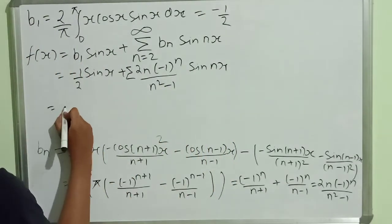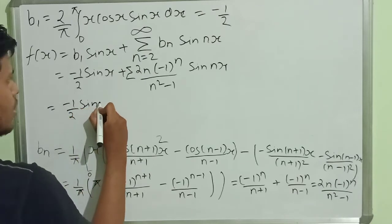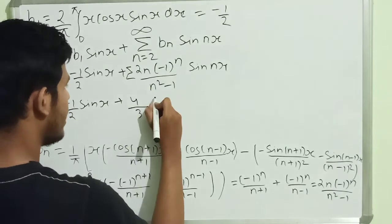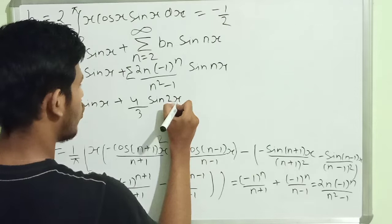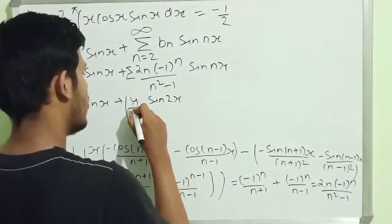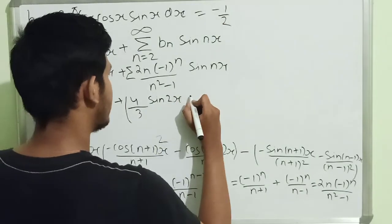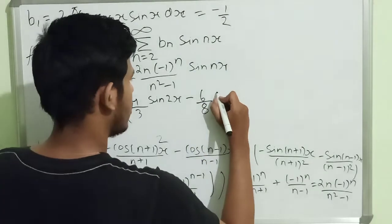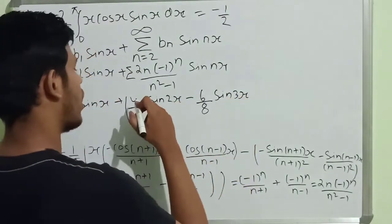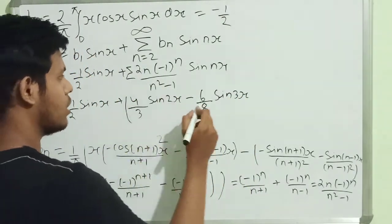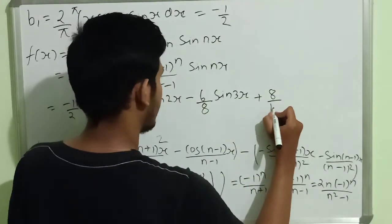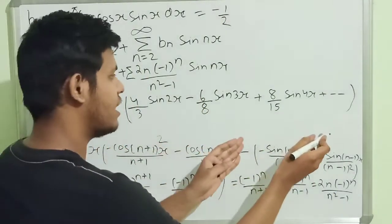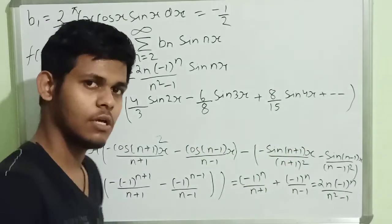Expanding the series: f(x) equals minus 1/2 · sin(x), plus when n equals 2: 4/3 · sin(2x), plus when n equals 3: minus 6/8 · sin(3x), plus when n equals 4: 8/15 · sin(4x), and so on. This is our complete half-range Fourier sine series. Like my video, share it, and subscribe to my channel. Thank you all.